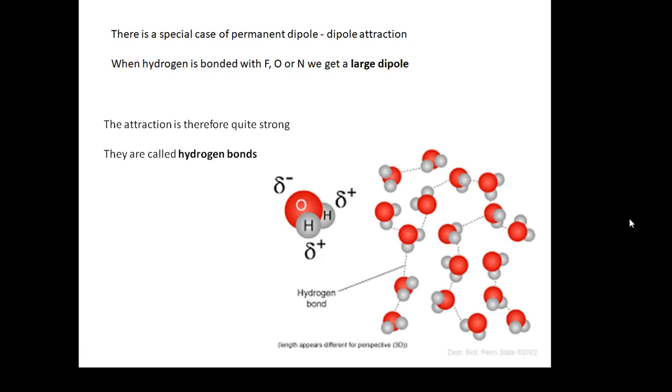For example, hydrogen bonded with oxygen, we're talking water, H2O. And water molecules have quite a large dipole. And so, water molecules attract each other with hydrogen bonds. They're called hydrogen bonds.